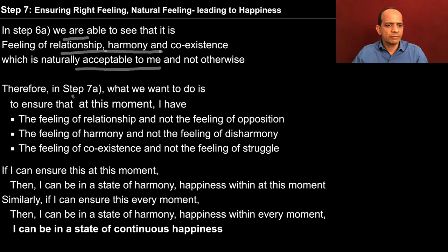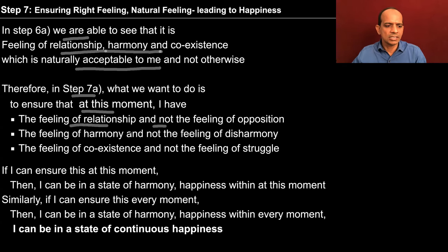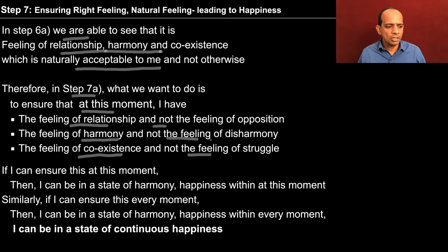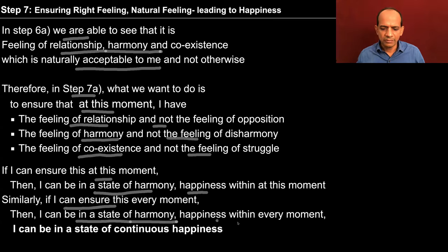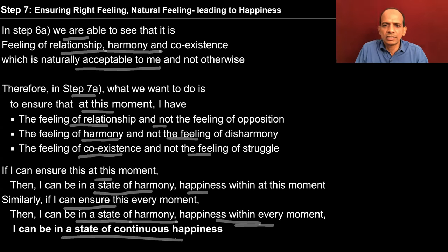In step 6a we are able to see that it is the feeling of relationship, harmony and coexistence which is naturally acceptable to me and not otherwise. And in step 6b we decided that I need to understand this — I need to ensure the contemplation of relationship, understanding of harmony and realization of coexistence within. So in step 7a what we want to do is to ensure that at this moment I have the feeling of relationship and not the feeling of opposition, feeling of harmony and not disharmony, feeling of coexistence and not struggle. I need to ensure this from moment to moment within me.